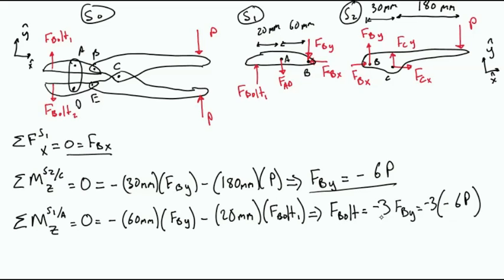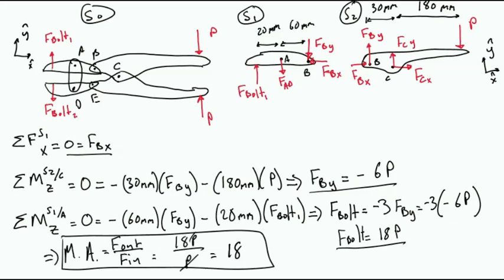Solving for Fbolt, we find that it is minus 3 times FBy. However, plugging in that FBy has been drawn in the opposite direction in both S2 and S1, we plug in minus 6 for FBy. This gives us that the force of the bolt is 18 times P.